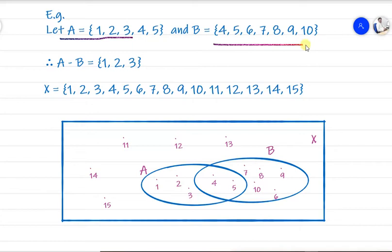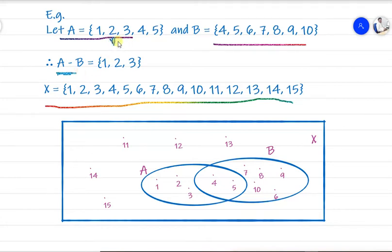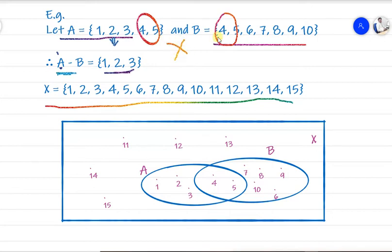Let's see an example. We have set A, set B, and universal set X. To find A minus B: take all elements from set A, but skip the elements 4 and 5, because those elements also belong to set B. So A minus B equals {1, 2, 3} — all elements of A except the common elements 4 and 5.